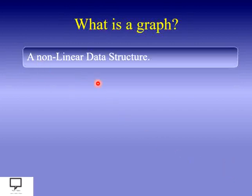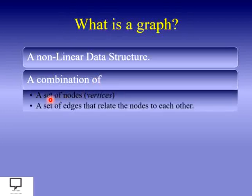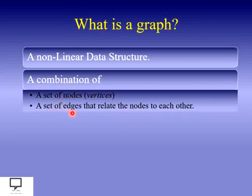Graph is a non-linear data structure. It is a combination of a set of nodes and a set of edges. These nodes are also called vertices, and the set of edges are used to connect two different nodes — they relate the nodes to each other.